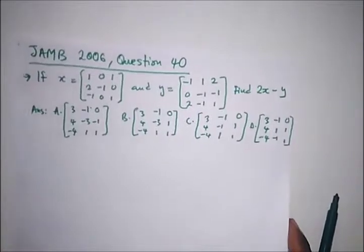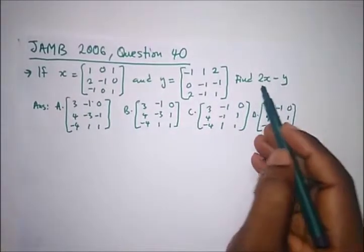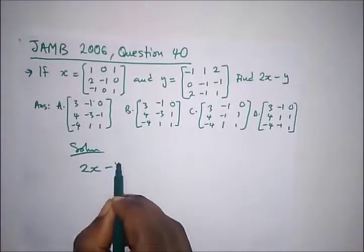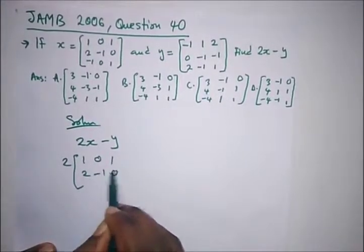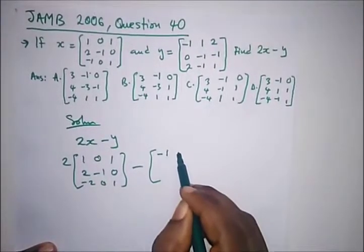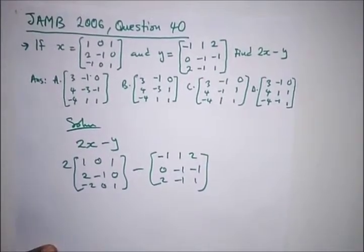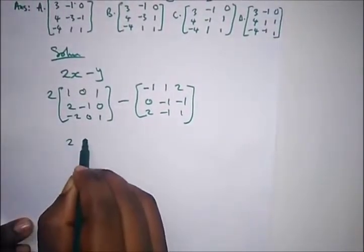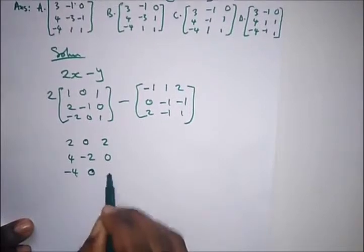Our next question is from JAM 2006 Question 40. It says: if X is this and Y is everything in this bracket, find two X minus Y. So we're looking for two X minus Y. That is two times X — where X is the 3x3 matrix: one, zero, one, two, minus one, zero, minus two, zero, one — minus Y, which is the matrix: minus one, one, two, zero, minus one, minus one, two, minus one, one. Multiplying two into the bracket we get: two, zero, two, four, minus two, zero, minus four, zero, two.